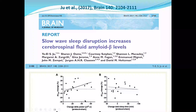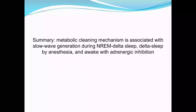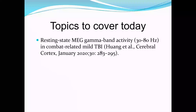The conclusion is clear: more delta wave power indicates less beta amyloid concentration, meaning the brain is doing its job and cleaning up the toxic beta amyloid — just as the animal research showed. In summary, the metabolic clearance mechanism is associated with slow wave generation during non-REM delta wave sleep, or during application of dexmedetomidine, or during the awake stage with adrenergic inhibition. Delta wave generation is associated with metabolic clearance as a healing mechanism.